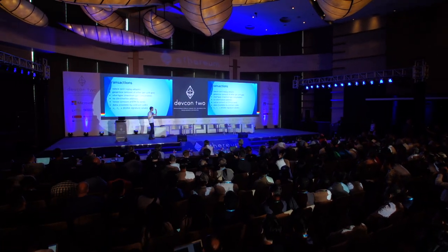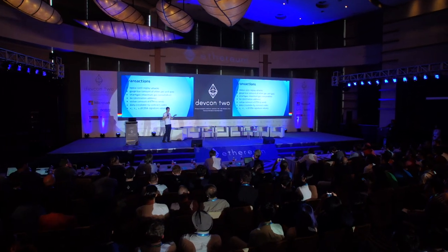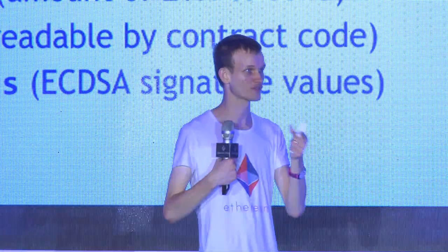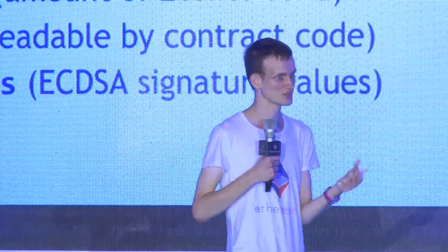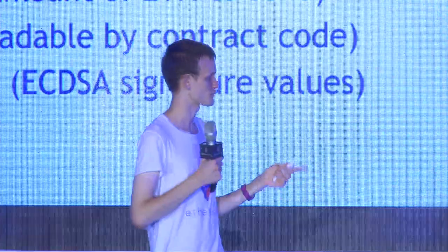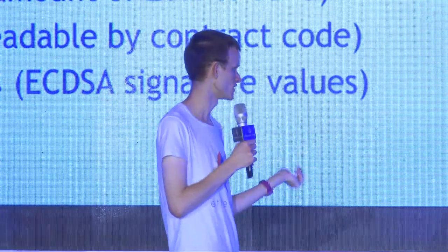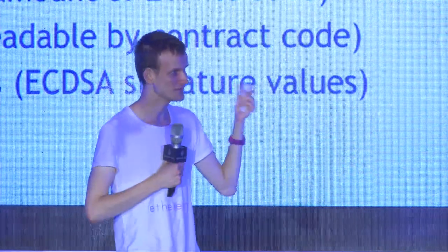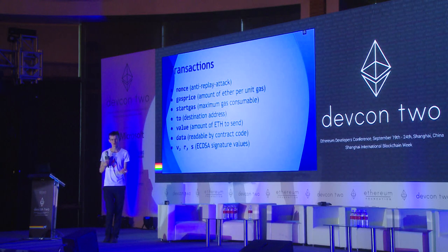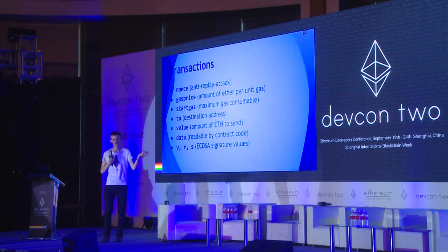Transactions have seven parameters. Nonce: prevents replay attacks — if I send you 10 ether, what stops you from including my transaction 10 times? Every transaction must include a unique number, and once a nonce is processed, the nonce in state increments so you can't include the same transaction again. Gas price: the amount of ether you pay per gas. Start gas: the gas budget. Destination address. The amount of ether sent. Data: if you're talking to a contract, data specifies what function you're calling and with what parameters. And VRS: elliptic curve digital signatures.